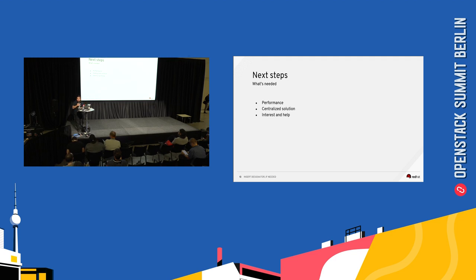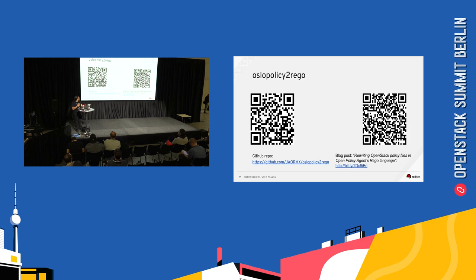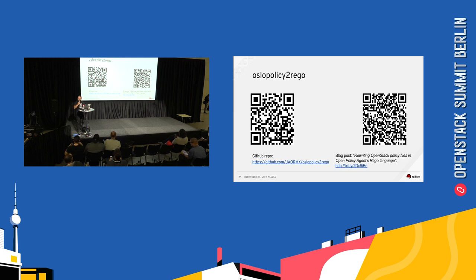To get this work done — even though I did this more or less in my free time — we need interest from people. If you're interested, please mention it in the reviews, give me a call. And if you're a client of Red Hat, contact your representative and tell them we need this done so we can get more time to work on this. The GitHub repo for the tool is available, and I also wrote a blog post about how to translate directly between the regular language and Oslo Policy and vice versa. Any questions?